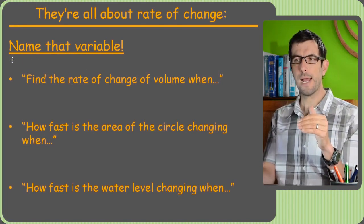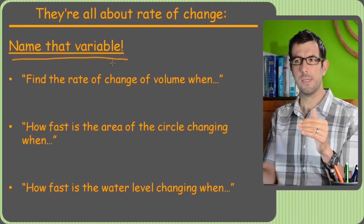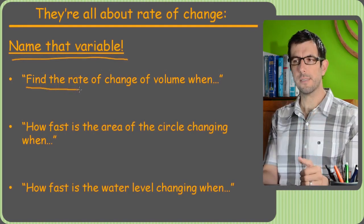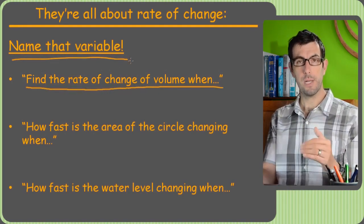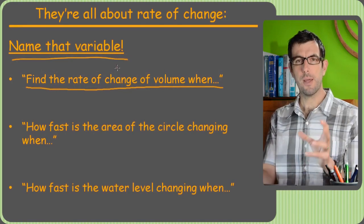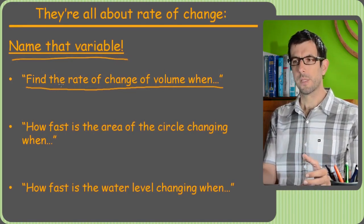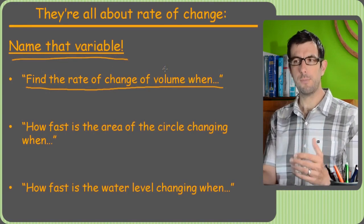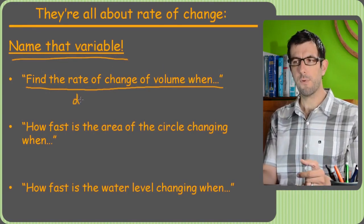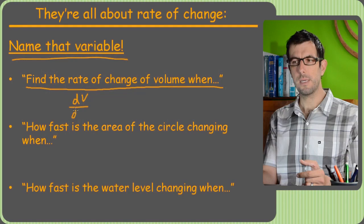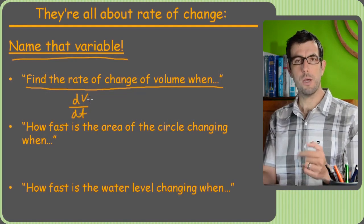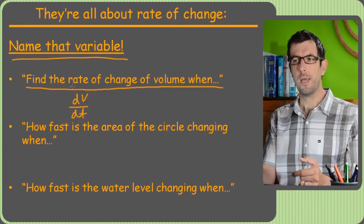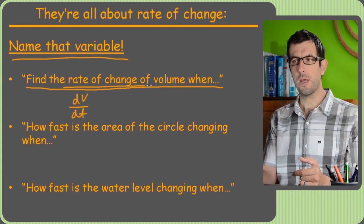right now we're just going to practice naming variables. So if you saw this sentence or this little piece of a sentence in a Related Rates problem, let's just write down the letter we'd want to write down. So they're saying, find the rate of change of volume. So how fast is volume changing? Well, if you followed what I was talking about before, that would be dV/dt, would be the rate of change of volume. And that's what they asked for.